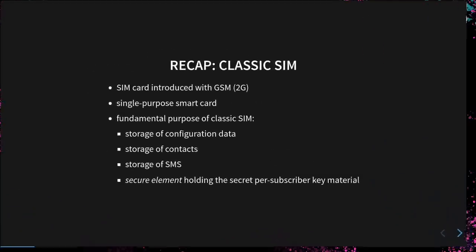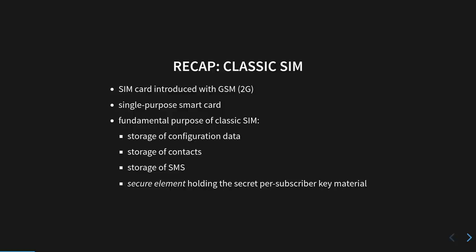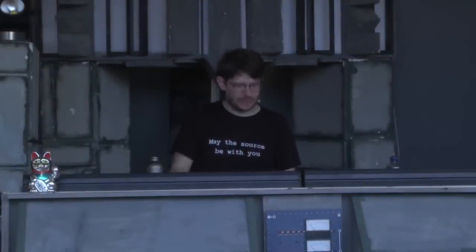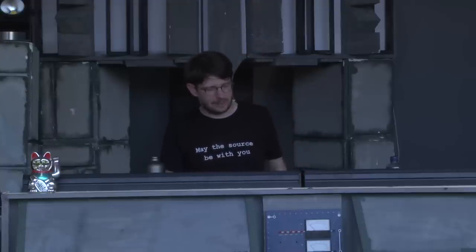Let's look a bit at the classic SIM to put this into context. SIM cards in telecom networks as we know today were introduced with GSM, the 2G technology. That means it was first deployed commercially in 1991. The idea of the original SIM card is what we call a single-purpose smart card — a card that's not just memory but has a processor and an operating system inside. It only has a single purpose, which is to be used in the GSM network. The fundamental purpose is to store network configuration data on the card, so you can move operator-specific configuration between devices.